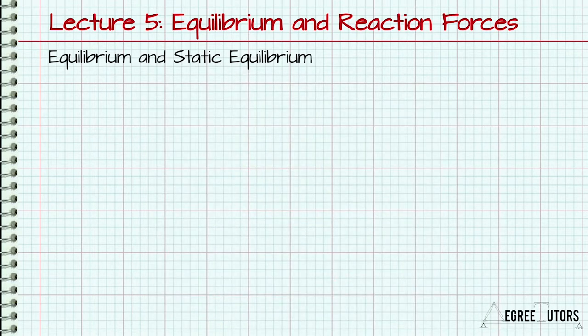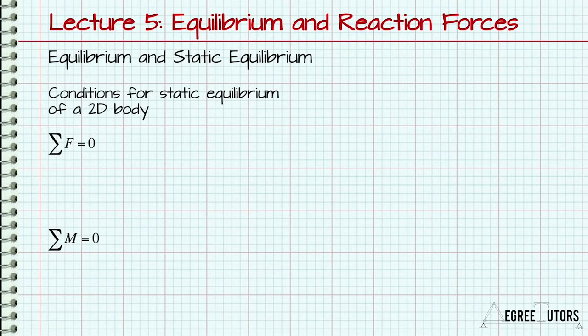For a 2D object in a state of static equilibrium, two conditions must be satisfied. The sum of all forces on the object must be zero and the sum of all moments on the object must be zero.